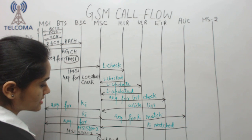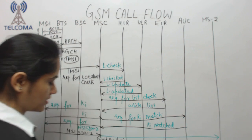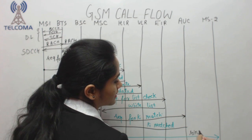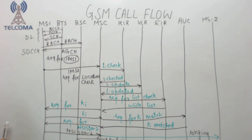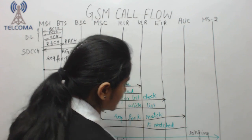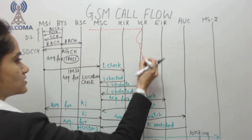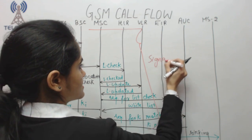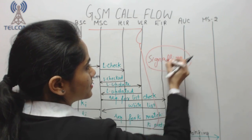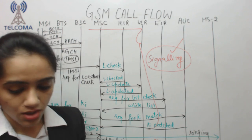The MSC performs digit analysis — a feature that helps locate where the called person is. Once the person is found, ringing begins. When ringing starts, the MSC sends a command to release the SDCCH, since SDCCH is only used for signaling. When the called person picks up, a Traffic Channel (TCH) is established between both ends for the actual voice conversation.